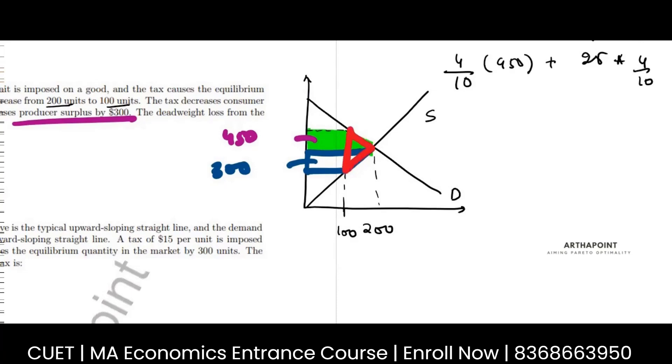I have to find this. So if I go ahead and if I add the loss in the consumer surplus, which is 450, and the loss in the producer surplus, which is 300, I will get 750 as this area.